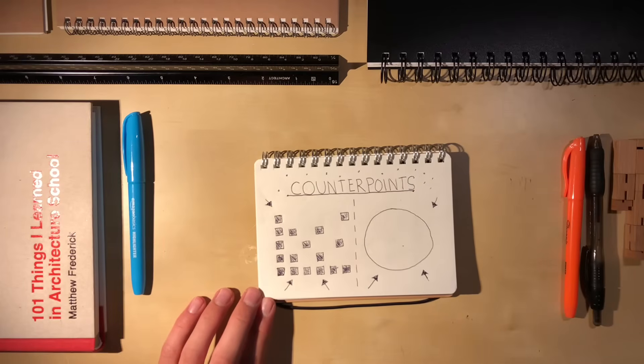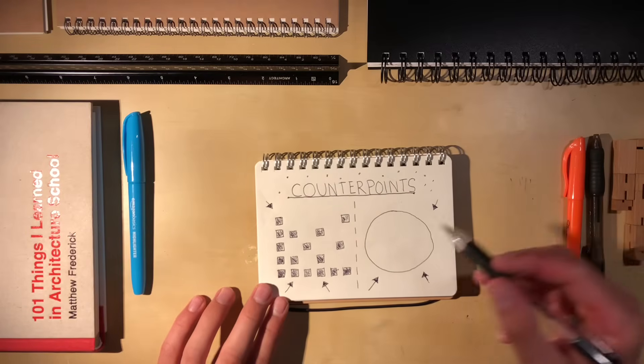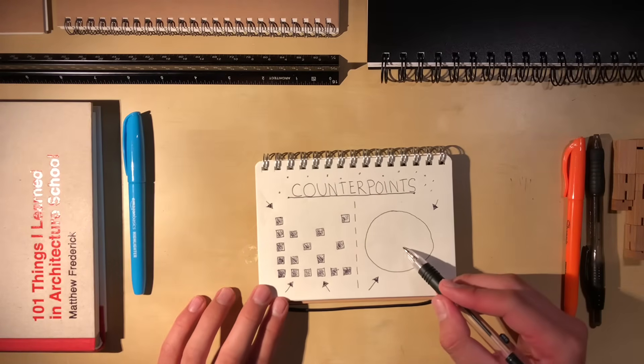The circle on the right has complete blank space on the inside. This void is counterpointed by the solidity of the several boxes on the left-hand side.